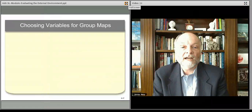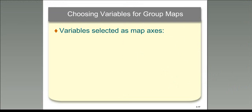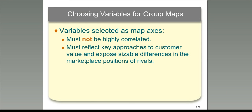Let's look at an example of how one might think about building a strategic group map. You look at the map axes and pick some, but you want to make sure they are things that don't necessarily go together. For example, revenue growth and profit growth tend to go together because if you sell more, you make more money — but profit per unit may not correlate. So it might be revenue growth versus gross margin per unit. You want to find things that don't correlate with one another.